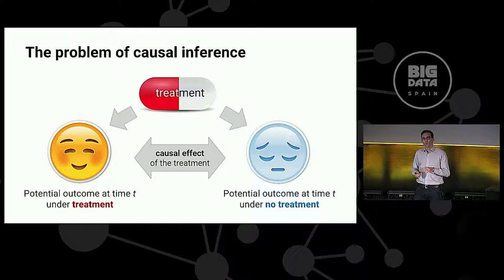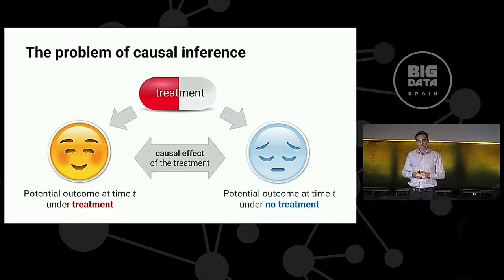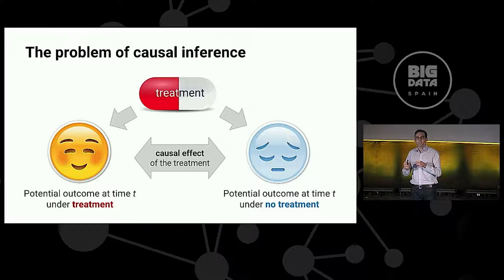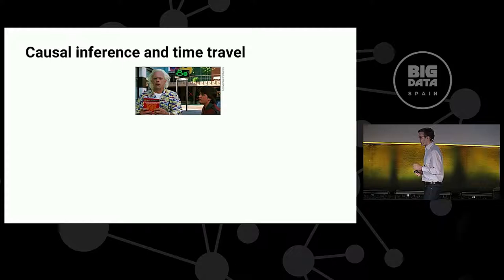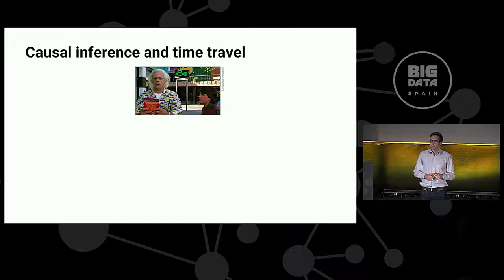So the only options really are to either run an experiment where we observe some of the potential outcomes under the treatment and some under no treatment, or to use what statisticians refer to as observational methods, observational analysis methods, to try and understand and estimate causal effects in the absence of an experiment. That's going to be the focus today. There's one exception, perhaps, and that returns to the Back to the Future movie that we started with. If we could travel back and forth in time, all of this wouldn't be a problem.